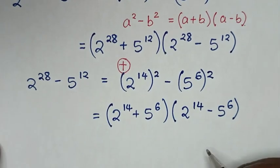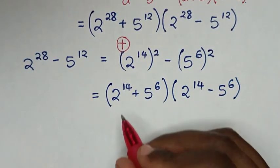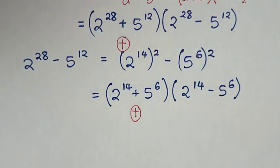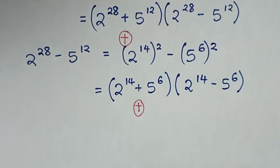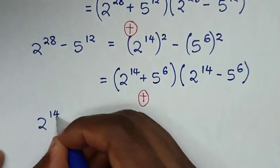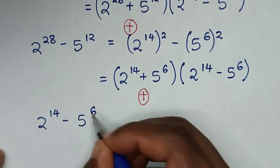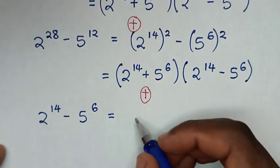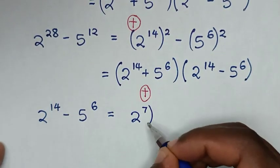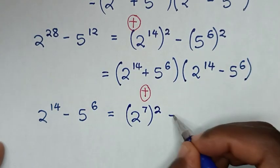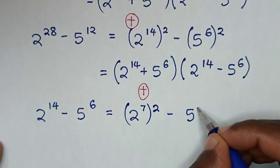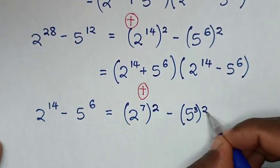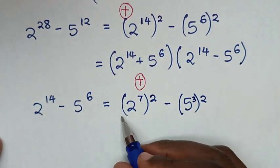The addition of these two exponents is a positive value, but this difference we don't know. So we'll continue to find the difference. From 2 power 14 minus 5 power 6, we make this in the form of a perfect square: 2 power 14 is the same as 2 power 7 squared, and 5 power 6 is the same as 5 power 3 squared.